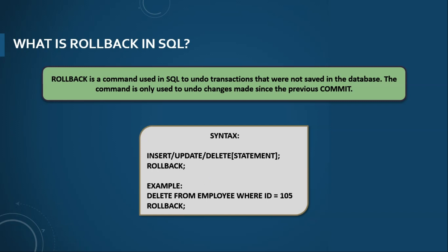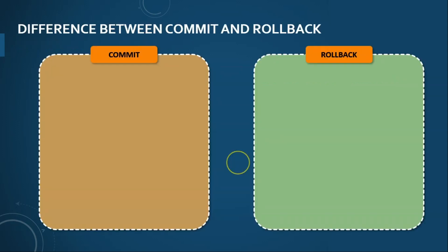The rollback command in SQL is used to revert changes performed by a transaction. Whenever a rollback command is used, it reverts all the changes since the last commit or rollback made in the SQL table. The syntax similarly uses just one keyword: ROLLBACK, and it is used with insert, update, and delete statements. For example, if I delete a record whose ID is 105 and want it back, I use the rollback command, which restores the deleted record and reverts the database to its original state.